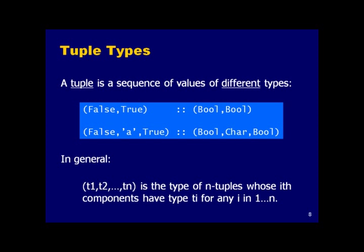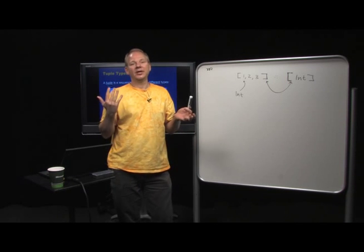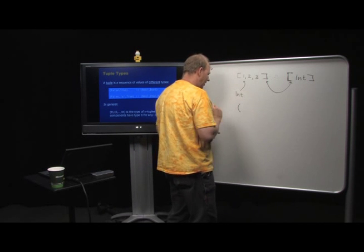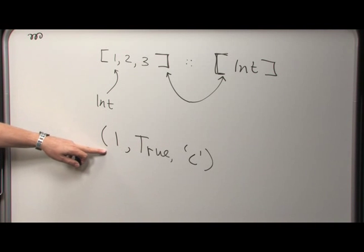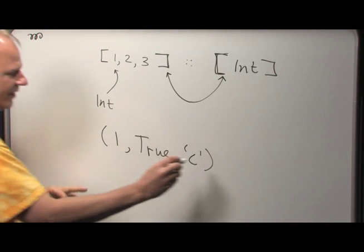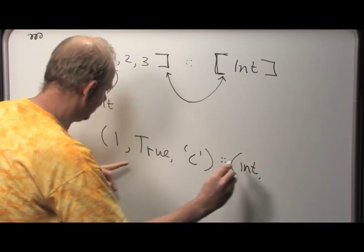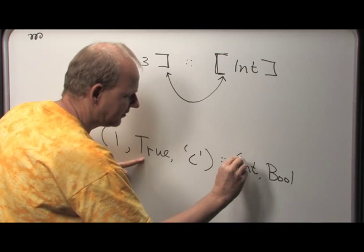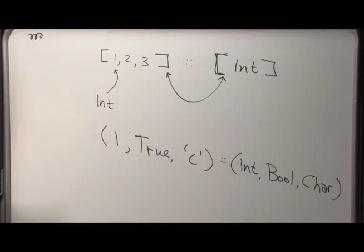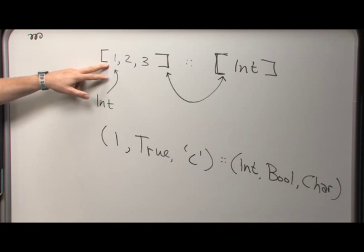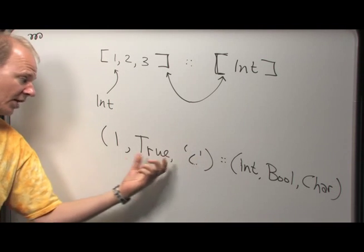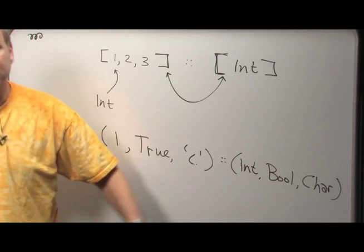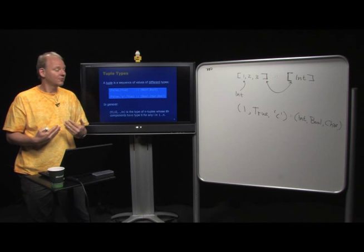The other type Haskell supports — along with F# and many functional languages — is the tuple. A tuple uses round brackets instead of square brackets. For example, `(1, True, 'a')` is a tuple of type `(Int, Bool, Char)`. Unlike a list where all values have the same type, a tuple can have values of different types, but its length is encoded in the type.